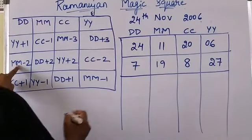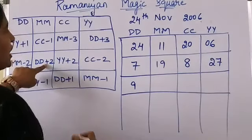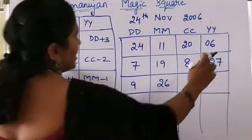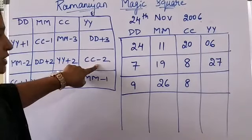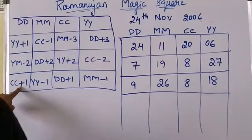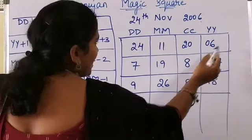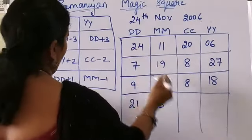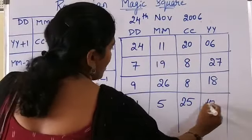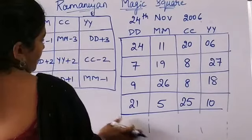For the third row: MM-2 = 11-2 = 9; DD+2 = 24+2 = 26; YY+2 = 6+2 = 8; CC-2 = 20-2 = 18. For the fourth row: CC+1 = 20+1 = 21; YY-1 = 6-1 = 5; DD+1 = 24+1 = 25; MM-1 = 11-1 = 10.